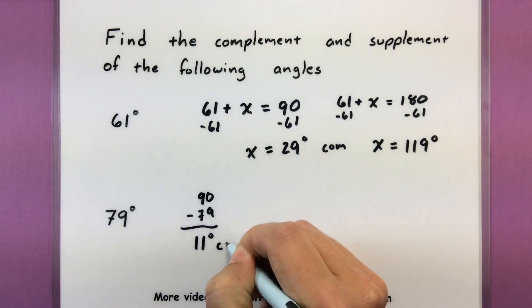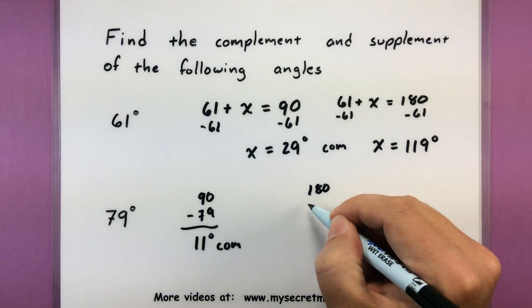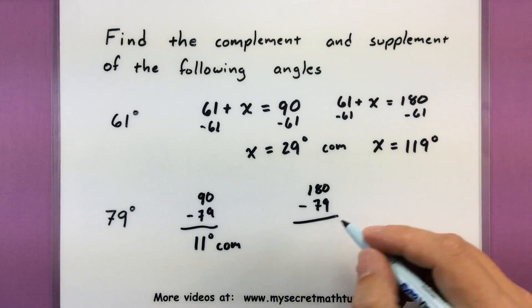So 11 degrees would be its complement. And taking 180 degrees minus 79, we get something like 101.